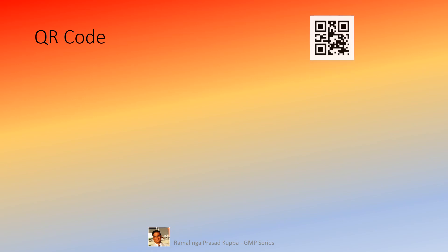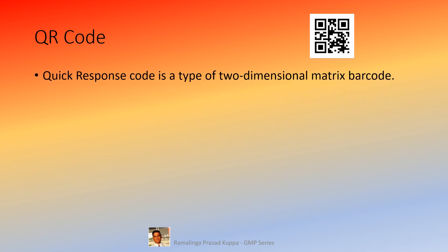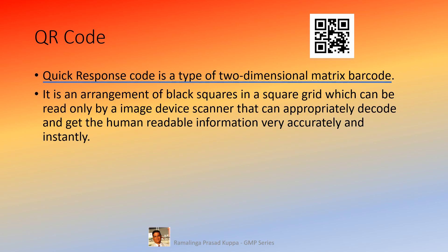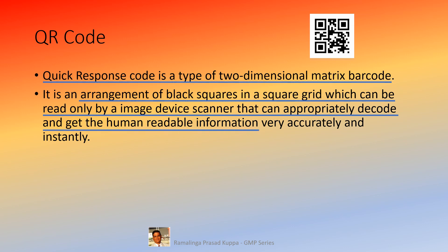The QR code looks like this — this is one example. Quick response code is a type of two-dimensional matrix barcode. As you can see, it is a two-dimensional square grid with a lot of information hidden which cannot be read by the human eye. It is an arrangement of black squares in a square grid which can be read only by an image device scanner that can appropriately decode and get the human-readable information very accurately and instantly. The QR code and the scanner are synchronized to translate the information in the squares into readable form.